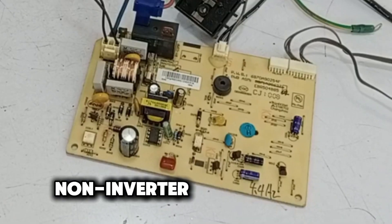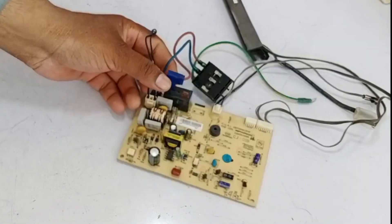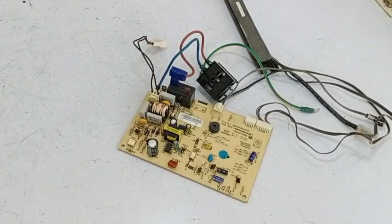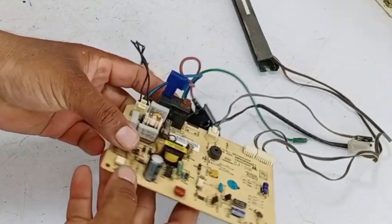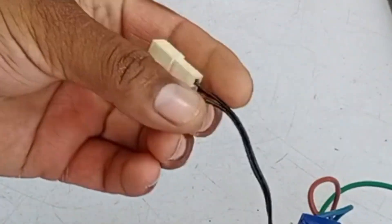This is an LG non-inverter air conditioner circuit board which has come in for repair. Typically, normal PCBs have a specific setup, but LG provides two wires here that are for the fan motor and it uses a slightly different motor.